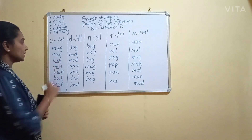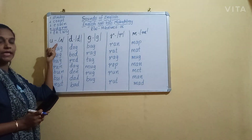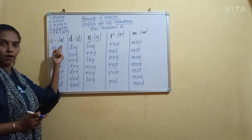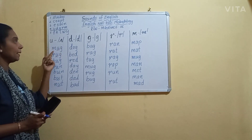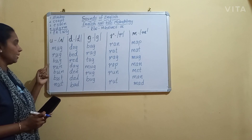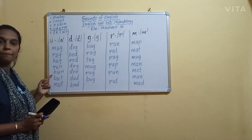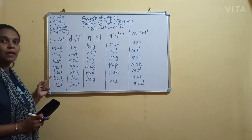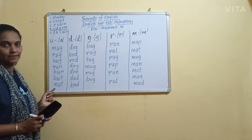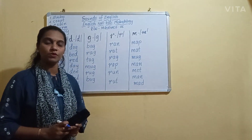Let us revise once again. Letter U says A. A is the sound of U here. Examples: mug, rug, bug, run, butt, and nut.